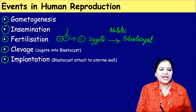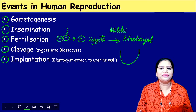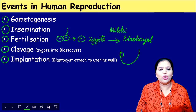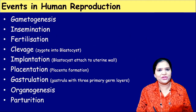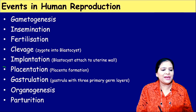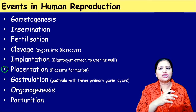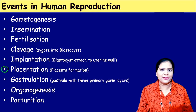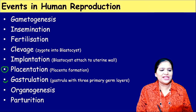The fifth step is implantation. The blastocyst goes and implants inside the uterine wall of the female — this stage is called implantation. The next step is placentation. The placenta is the connecting cord between the baby and the mother. So this stage — placenta formation — is called placentation.